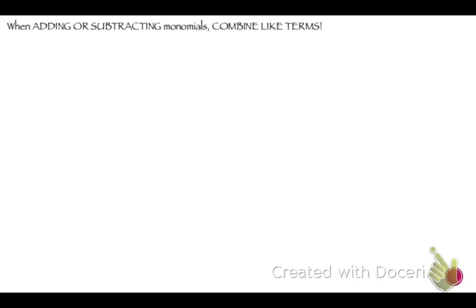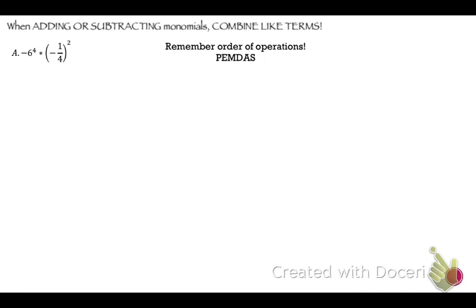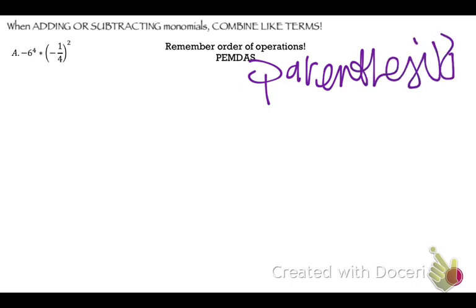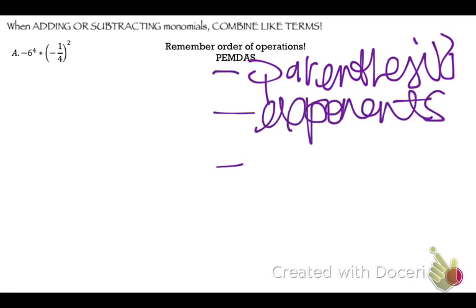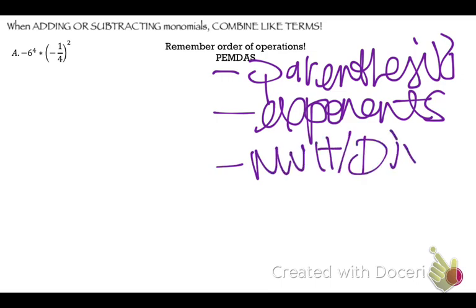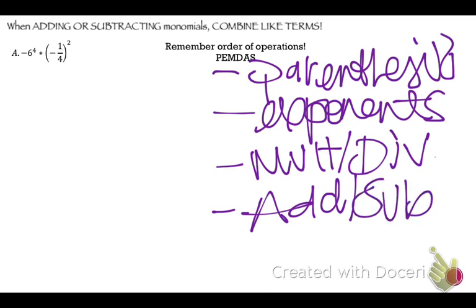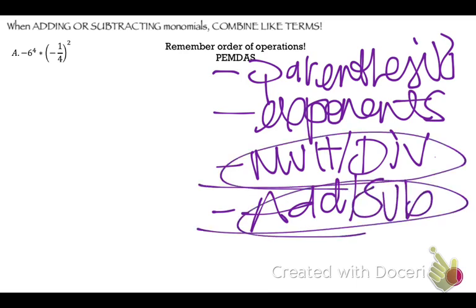When adding or subtracting monomials, you just combine like terms. Let's look at simplifying these. Remember order of operations — that's PEMDAS: parentheses, exponents, multiplication and division, and then addition and subtraction. For multiplication and division, it's just whatever comes first — you work left to right.